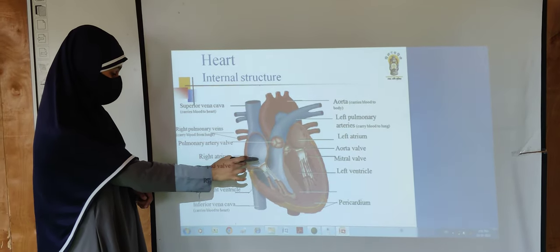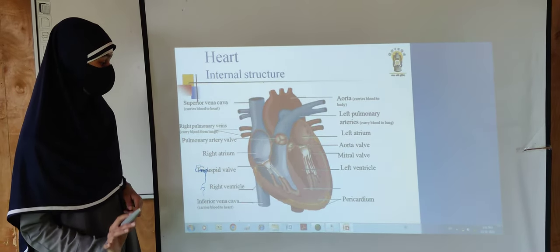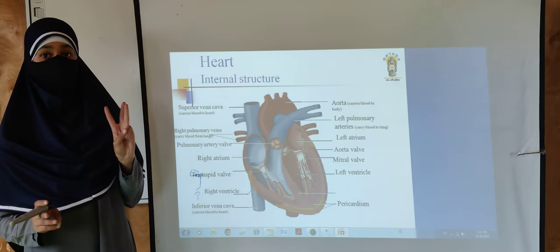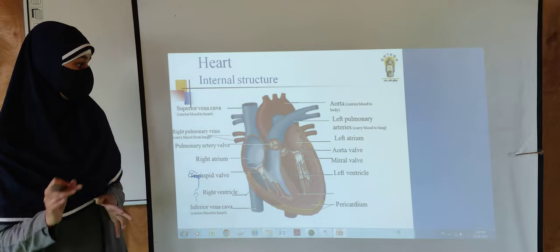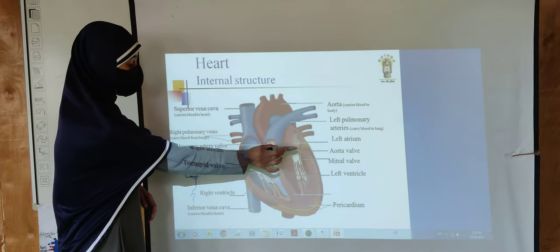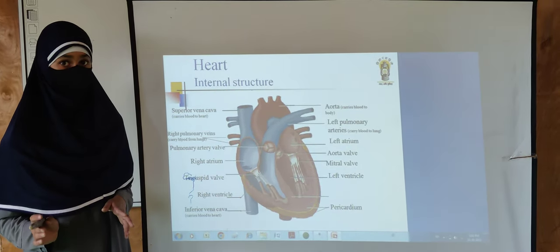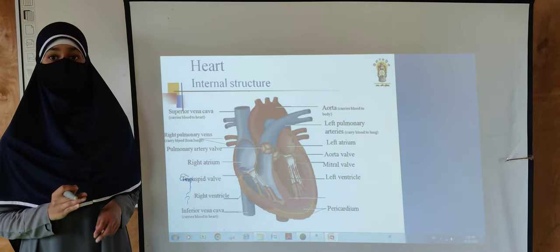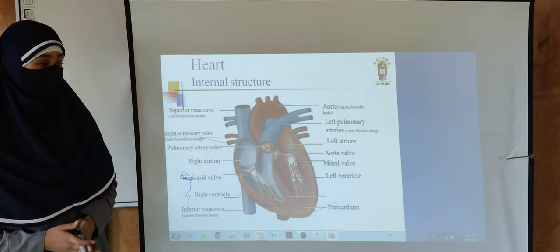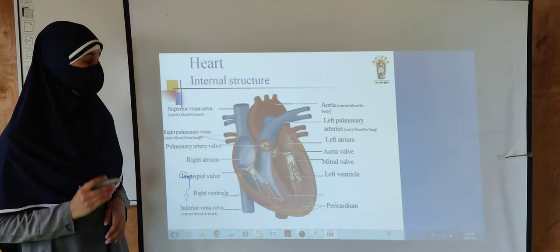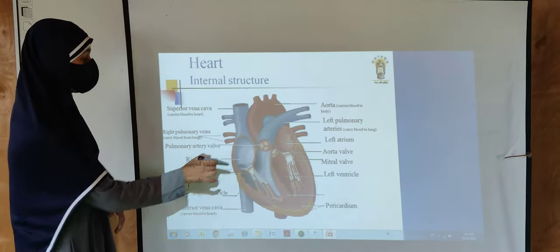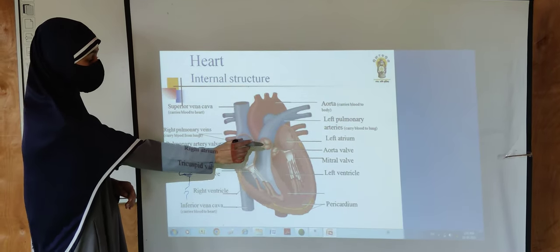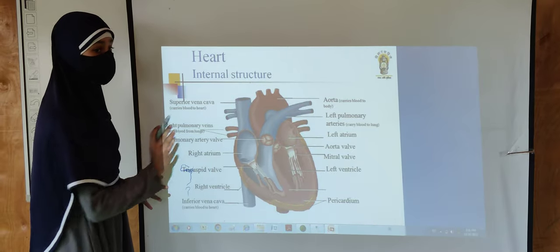The right atrium and the right ventricle are connected through a tricuspid valve, which consists of three cusps. Similarly, the left atrium and the left ventricle are connected through a bicuspid or mitral valve, which consists of two cusps. There are also valves at the opening of the pulmonary trunk and the aorta, called the pulmonary valve and the aortic valve.